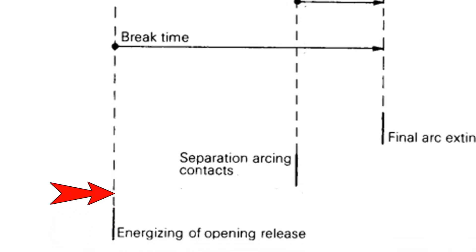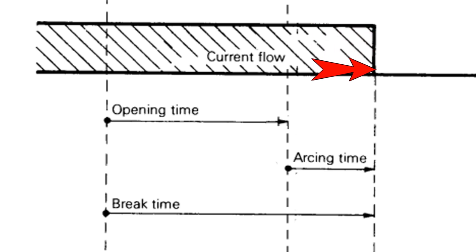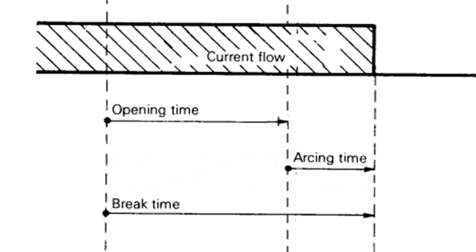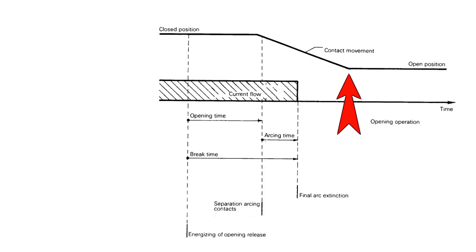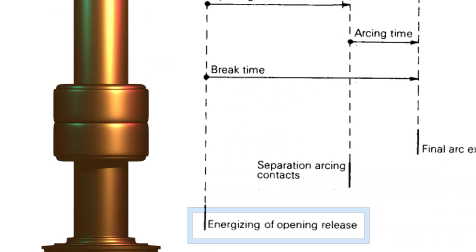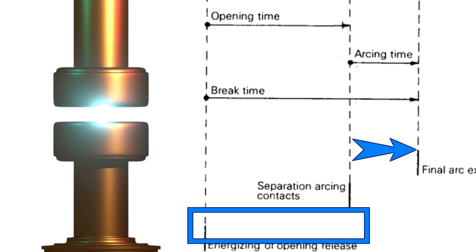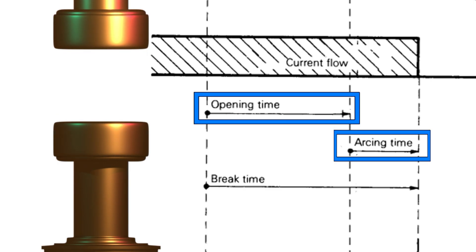So the current continues until the arcing time is finished. When the coil is energized, the opening operation gets started, and finally when the arc is extinguished, the current is interrupted — the opening operation is electrically completed. This time is called the break time. The movement of the moving contact will still continue and finally it stops at the open position of the circuit breaker. So breaking time means: from initiation of opening release to the actual interruption of current — that is, opening time plus arcing time.